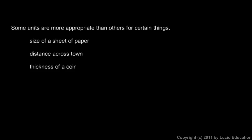It should make sense that some units of measurement are more appropriate for certain things than others. For example, the size of a sheet of paper might be 8½ inches by 11 inches — you wouldn't measure that in miles. The distance across town might be 30 miles in a big city like Atlanta. You wouldn't measure that in feet, although you could — saying it's 39,000 feet — but nobody has a mental grasp on how far 39,000 feet is.